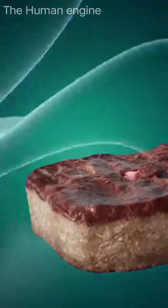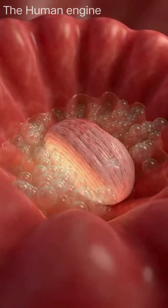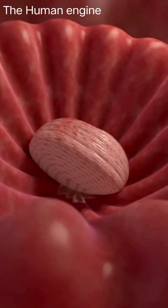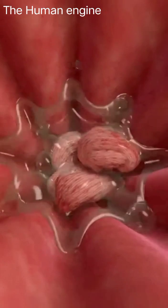But what happens once it enters your system? Inside the stomach, powerful acids and enzymes work tirelessly to break down complex protein structures into amino acids, preparing them for absorption.